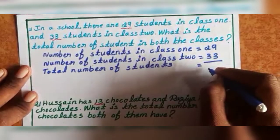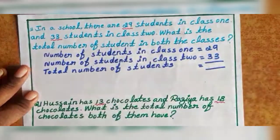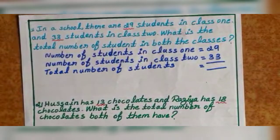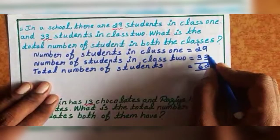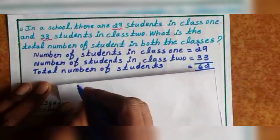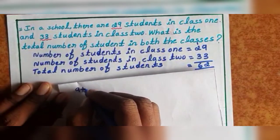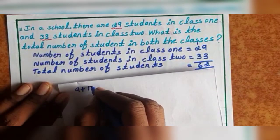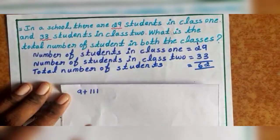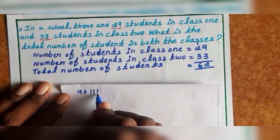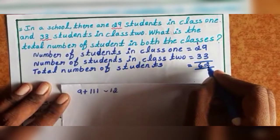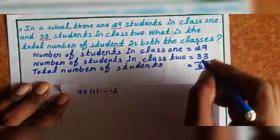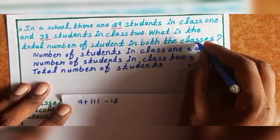Add now. First, 9 plus 3. Count now — 9, next number: 10, 11, 12. So 12 units only. Write 2. Next, balance 1 — you can transfer to the next number.